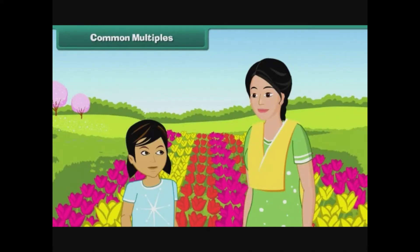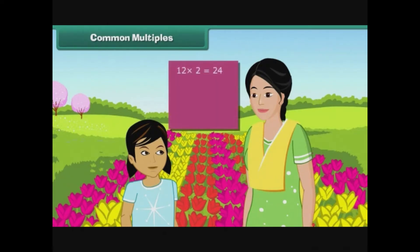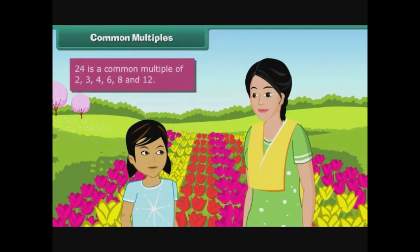Prerina notices that a patch contains red rose plants arranged in two rows of twelve plants each. Another patch contains yellow rose plants arranged in three rows of eight each. Yet another patch contains pink rose plants arranged in four rows of six each. Twenty-four is a common multiple of two, three, four, six, eight and twelve.